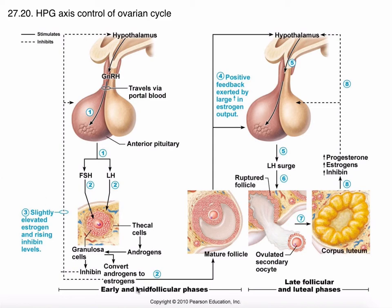What those estrogens do is help the follicle to mature and eventually rupture. As estrogens increase — because the granulosa cells increase in number — you get this positive feedback that pushes out what's called the LH surge, which stimulates ovulation. Then those leftover granulosa cells form the corpus luteum, which produces estrogens as well as progesterone and inhibin to shut off production again.